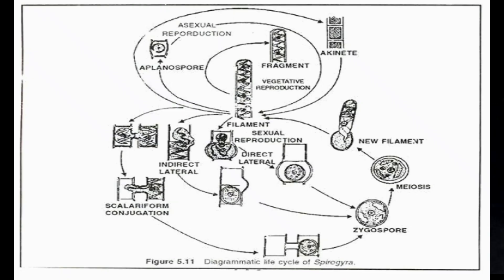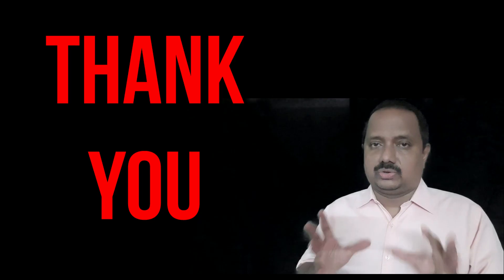Another important feature of Chlorophyceae is the haplontic life cycle, where the plant body is haploid and the diploid stage is represented only by the zygote. Meiosis takes place in the zygote — zygotic meiosis — and zygotic spores are produced. These spores develop into the plant body, which then directly produces gametes without reduction division. Since the reduction division takes place in the zygote, this is zygotic meiosis, which is a typical character of Chlorophyceae.